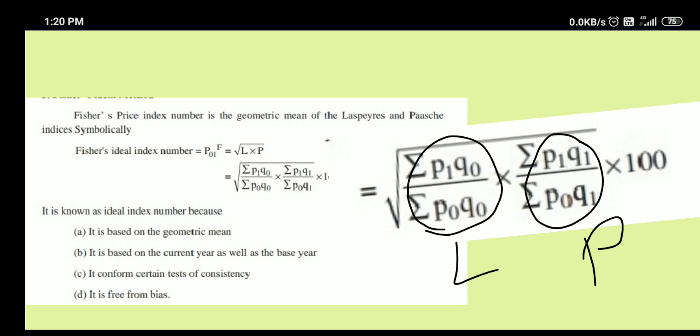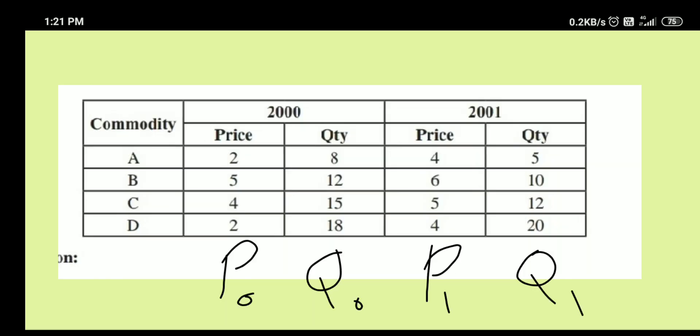Let us take an example and see how to construct Fisher's price index number. Here is a sum. They have given four different commodities A, B, C and D, and the price and quantity details for two different years are given here: 2000 and 2001.